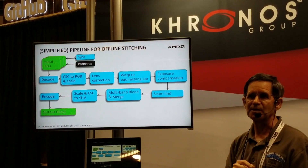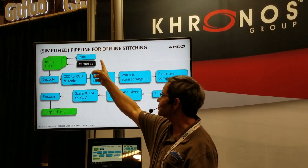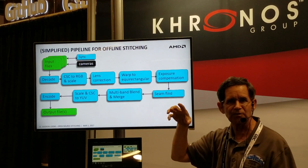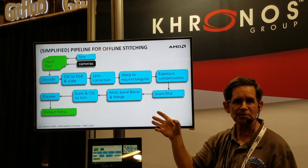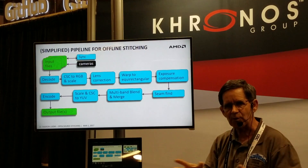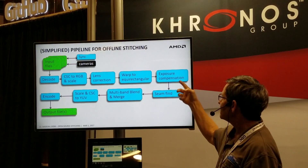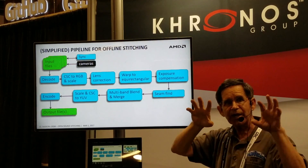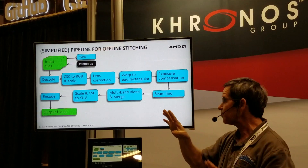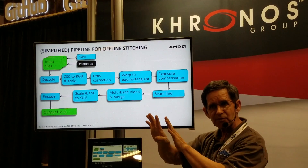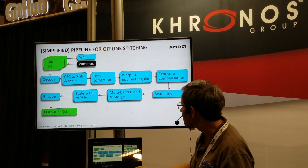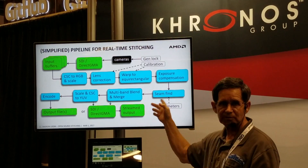So this is what the pipeline looks like. You have your cameras, you bring it in, you decode from your cameras, you do a color space conversion, you lens-correct based on the geometry of the lens. You warp it into equirectangular space — similar to a Mercator projection for a map of the world, a flat representation of the sphere. We adjust exposure because each camera is going to be seeing different lighting conditions. We find seams in the overlap, merge it all together and blend it so you can't see where the seams are. Then we output it to an encoder or stream it directly over the internet.